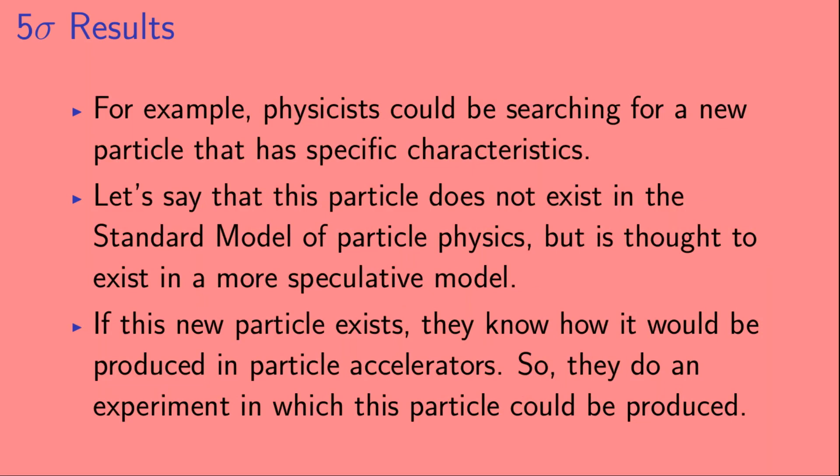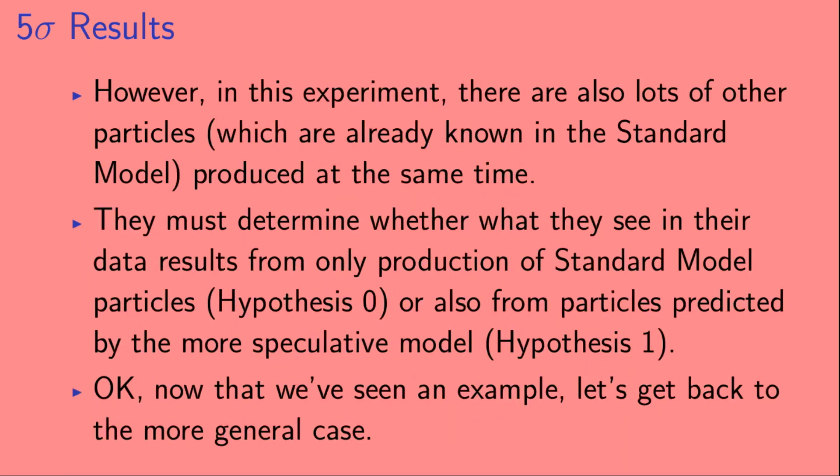For example, physicists could be searching for a new particle that has specific characteristics. Let's say that this particle does not exist in the standard model of particle physics, but is thought to exist in a more speculative model. If this new particle exists, they know how it would be produced in particle accelerators, so they do an experiment in which this particle could be produced. However, in this experiment, there are also lots of other particles which are already known in the standard model, produced at the same time. They must determine whether what they see in their data results from only production of standard model particles, that would be hypothesis 0, or also from particles predicted by the more speculative model, that would be hypothesis 1.